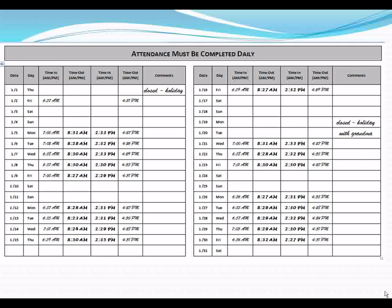The main category is attendance, which must be completed daily. This section reflects the full month and only requires the time in and out. This is a big change — please let the parent know they must continue to do this on a daily basis. The time in and time out should be listed to the minute and should not be rounded out.